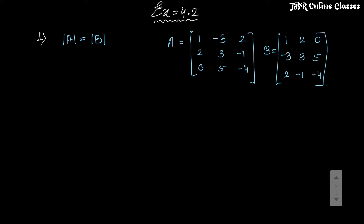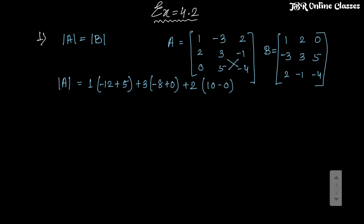Now find det(A). Using the cofactor expansion formula: first element is 1, then crisscross — 4 × (-3) = -12, and minus minus gives plus 5. Second term: +3, then 2×(-4) = -8 and 0×(-1) = 0. Last term: +2, then 5×2 = 10, minus 0. This gives -7, -24, and 20.